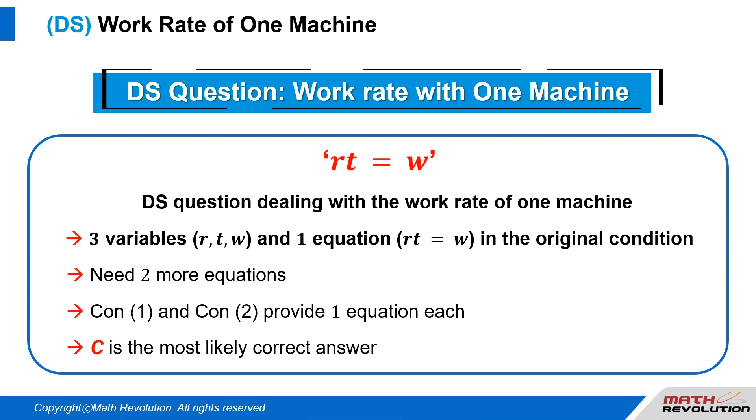In the original condition, let the work rate, time, and work done of one machine be R, T, and W. So R times T equals W.